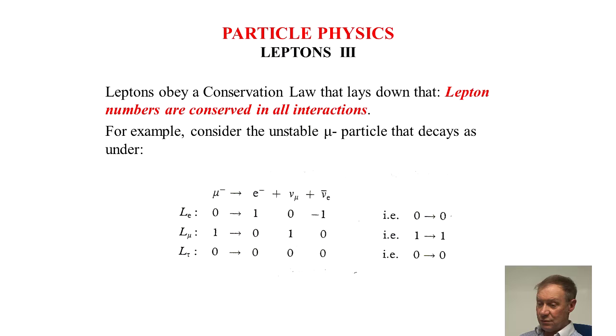The Lmu, that's one in that case, nought electron, one for the neutrino and nought for the electron, so one goes to one.